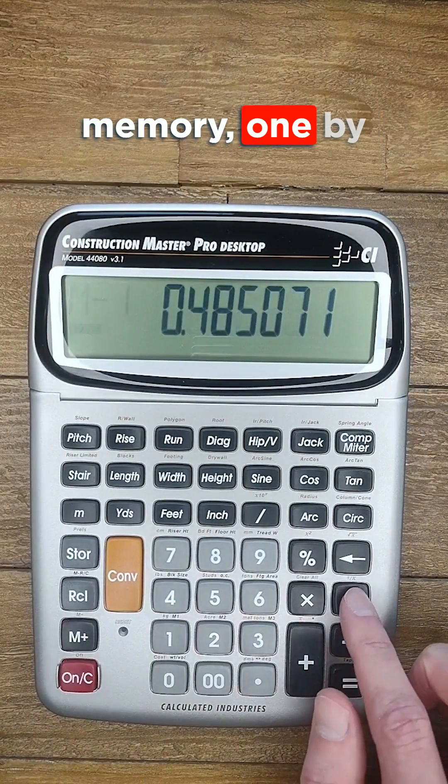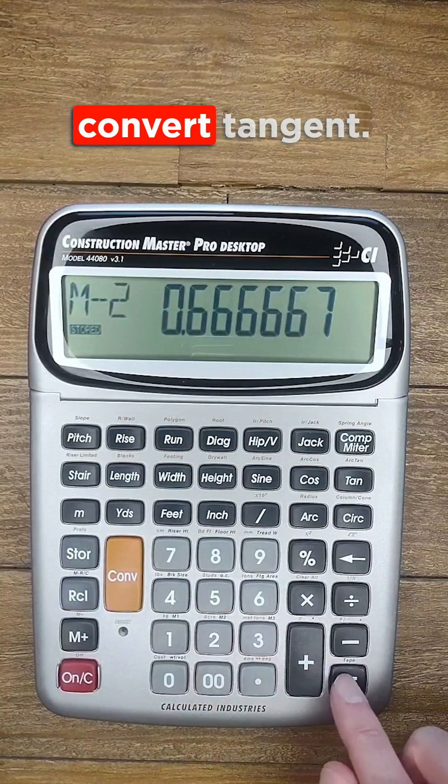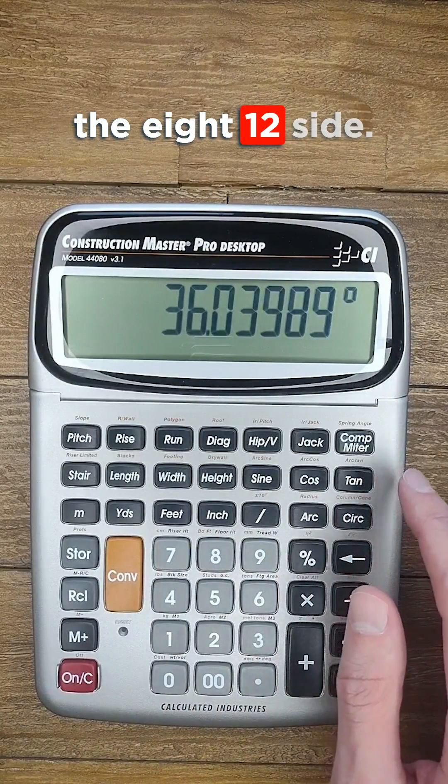Now I'm dividing memory 1 by memory 2 and I'm going to push convert tangent to give me the backing angle on the 8-12 side.